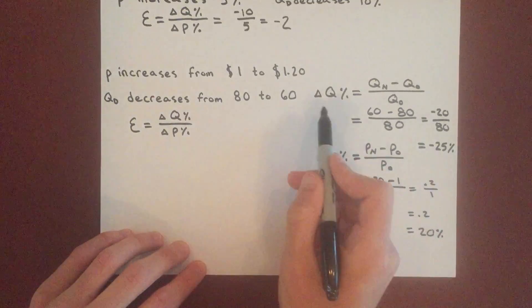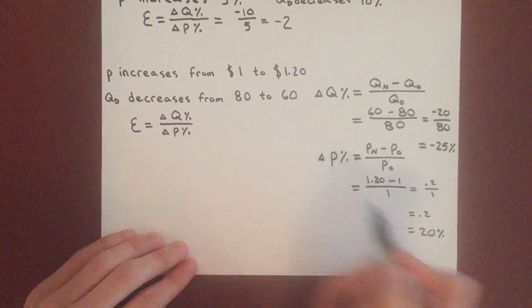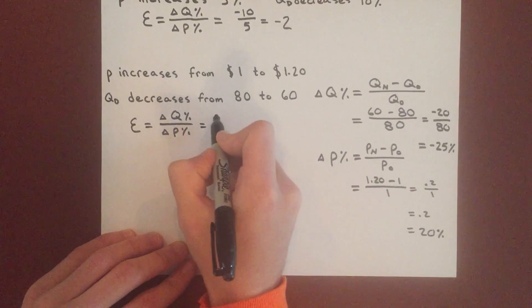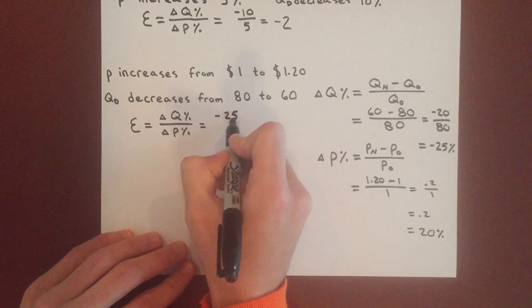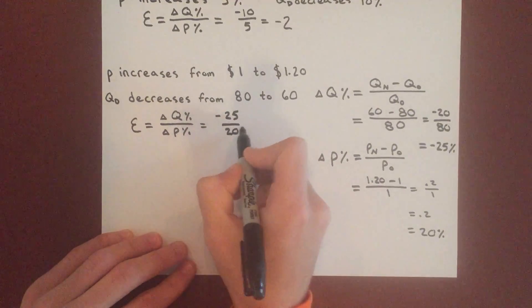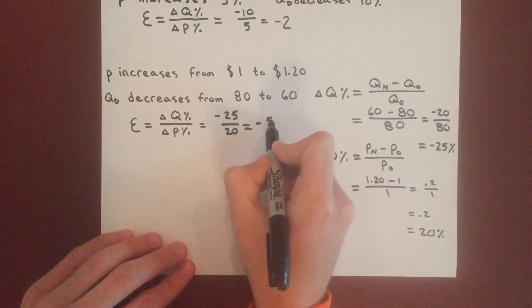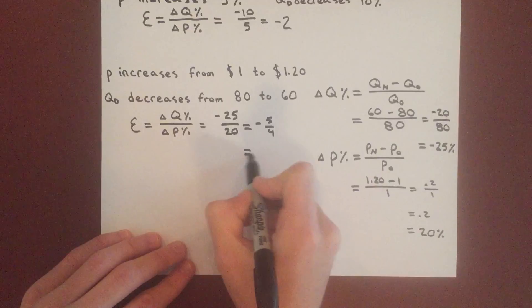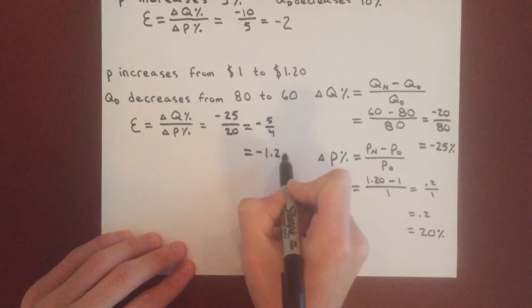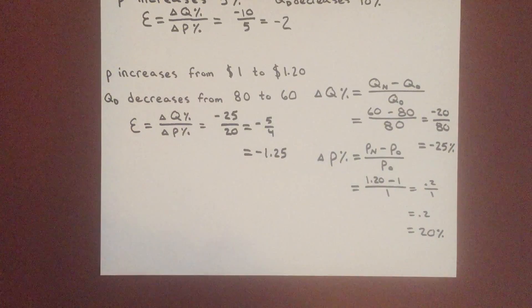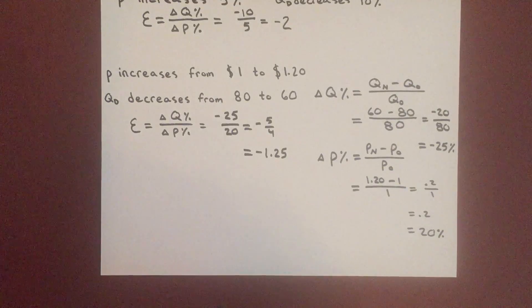Now that we have the change in price as a percentage and the change in quantity as a percentage, we can plug these in. We get negative 25 over 20, so elasticity equals negative 5 over 4, which if you want it as a decimal will be negative 1.25. So those are two algebraic examples on finding elasticity.